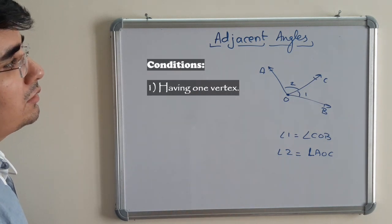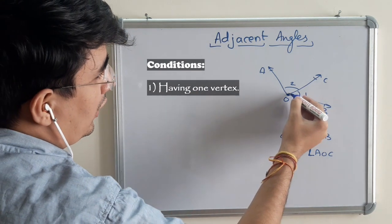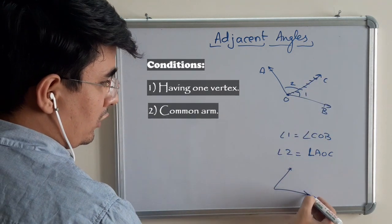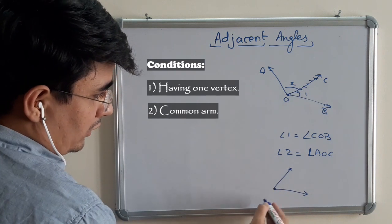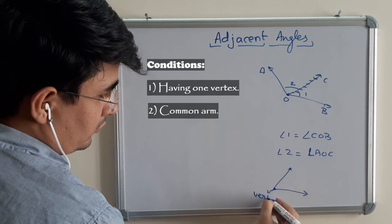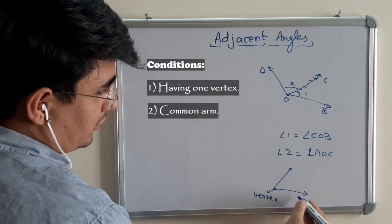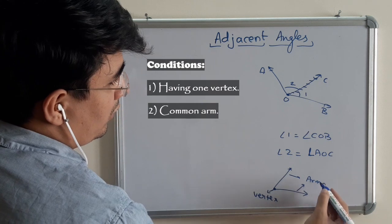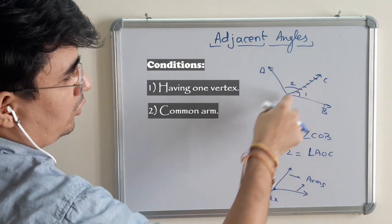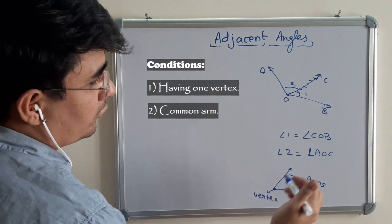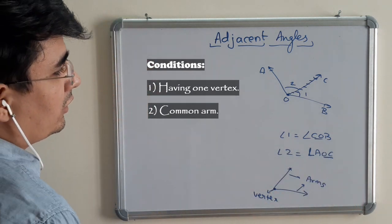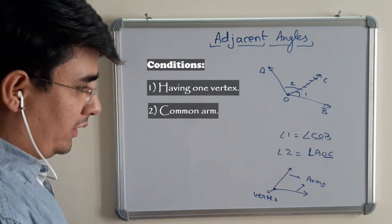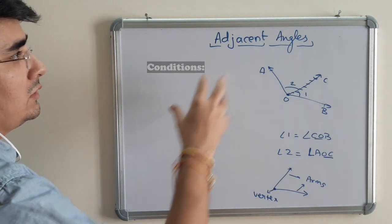Second criteria is that they have a common arm. When we say this is an angle, there are a few things. This is known as the vertex, and these two lines are known as the arms. So this OC is the common arm. You can see in the name also, OC is the common arm for both. If these two criteria meet, they are known as adjacent angles.